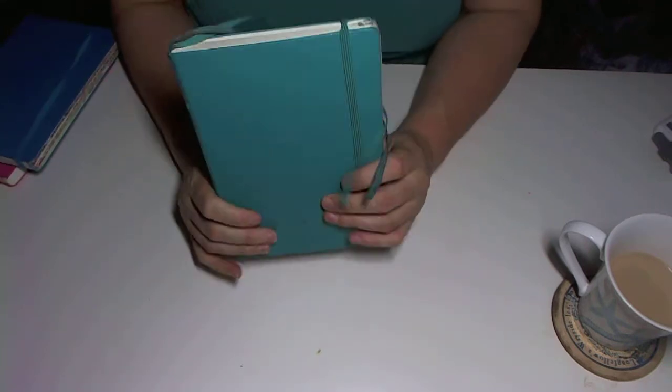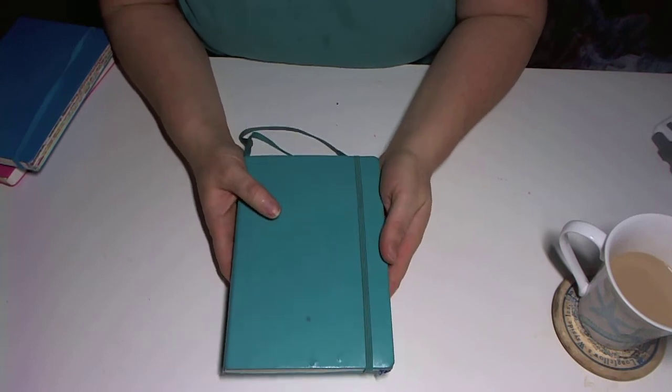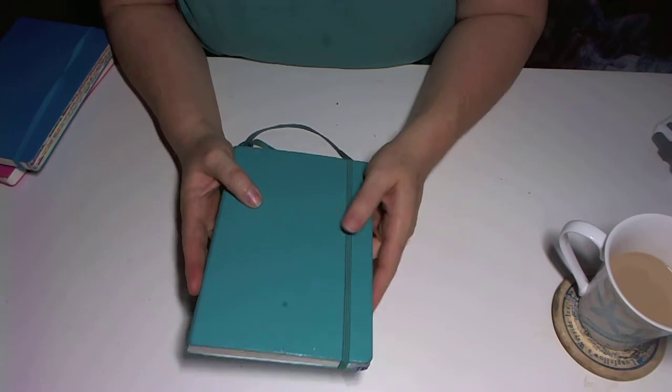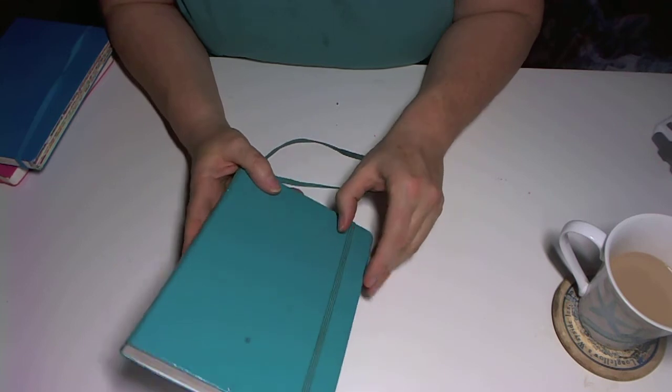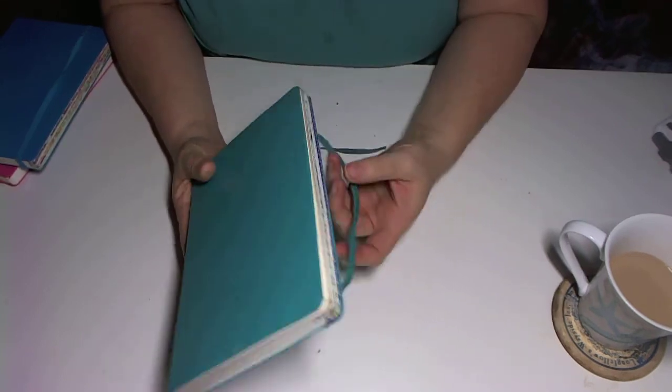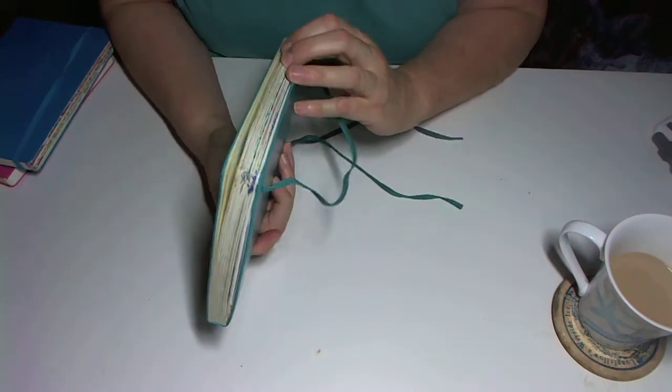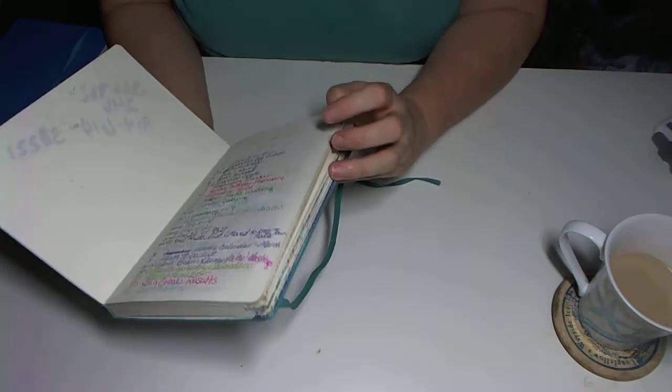So I ended up buying the Leuchtturm 1917. These are really cool little books. What I really like about them is, like the Moleskines, they've got the elastic around it. However, they come in a lot more colors than Moleskines do.